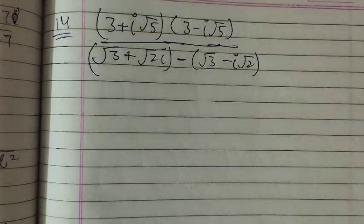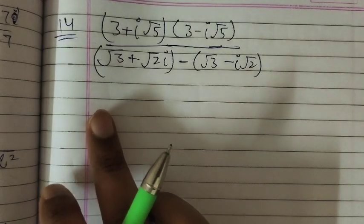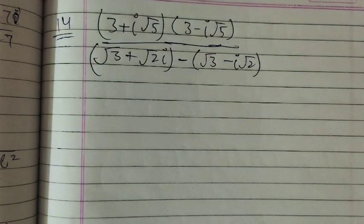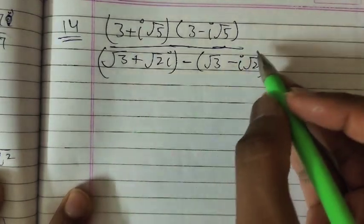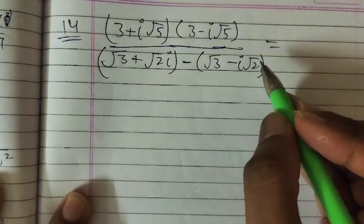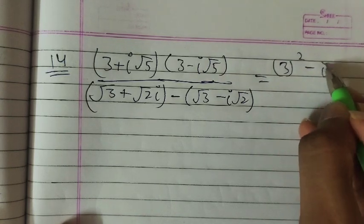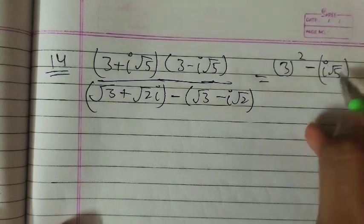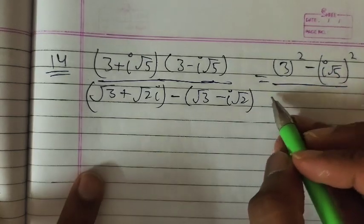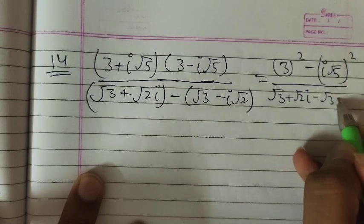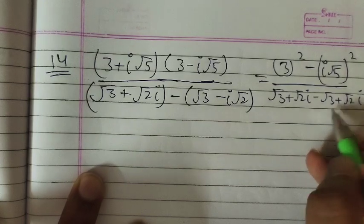Question number 14: (3 plus ι√5)(3 minus ι√5) divided by (√3 plus √2 ι) minus (√3 minus √2 ι). The numerator uses (a+b)(a-b) = a² minus b²: 3² minus (ι√5)² = 9 minus 5ι². The denominator simplifies: √3 and minus √3 cancel, leaving 2√2 ι.